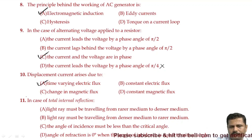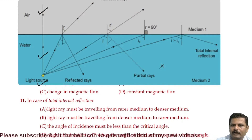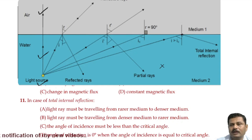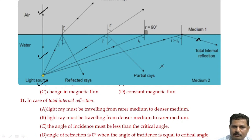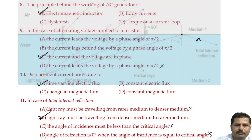In the case of total internal reflection, look at this diagram where the light ray travels from a denser medium to a rarer medium. Total internal reflection occurs when the light ray travels from a denser to a rarer medium and the angle of incidence in the denser medium is greater than the critical angle, at which point the light reflects back into the same medium. The angle of refraction is 90° when the angle of incidence equals the critical angle. So option B is the right answer.